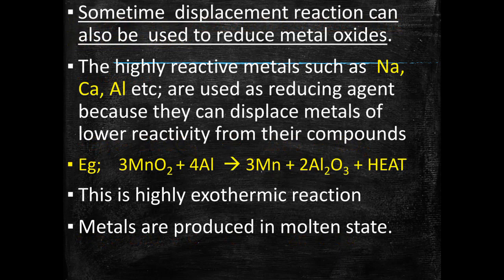Metal oxides can also be reduced by using a displacement reaction. Highly reactive metals can displace the metals from their metal oxides of low reactivity. Highly reactive metals such as sodium, calcium, and aluminium can be used as reducing agents. For example, manganese oxide — MnO2 — is reacting with aluminium. Aluminium is a highly reactive metal whereas manganese has low reactivity, so aluminium will displace manganese from MnO2 to give manganese and aluminium oxide, and a high amount of heat is also released.